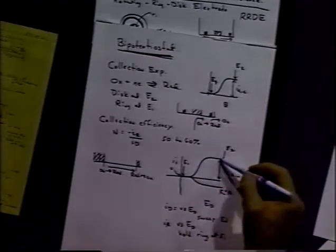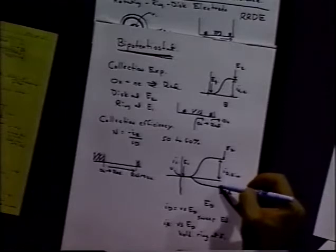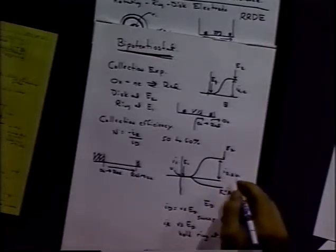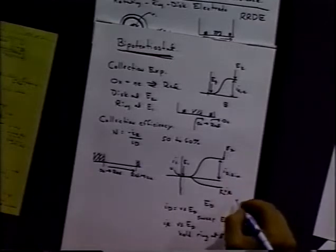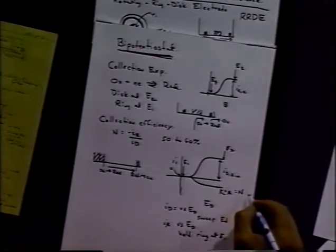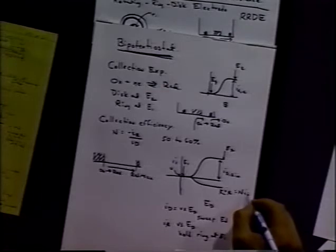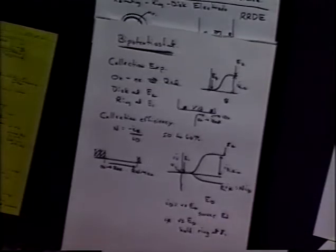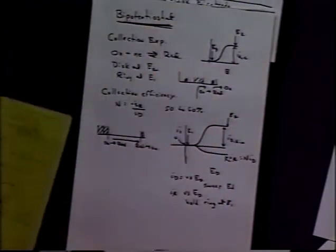So by looking at these two limiting currents, it gives us collection efficiencies. I sub R should, in principle, be equal to the collection efficiency times the disk current.